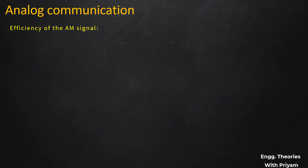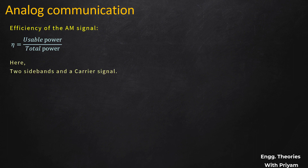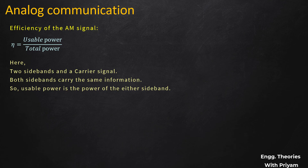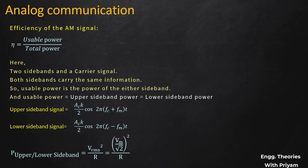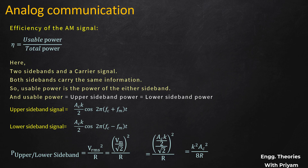The efficiency η of the amplitude modulated signal is the ratio of usable power to total power. Both sidebands carry the same information, so the usable power is the power of either sideband. The power of the upper or lower sideband signal, with amplitude Ac·k/2, equals (Ac·k/2 / √2)²/R = k²·Ac²/8R.